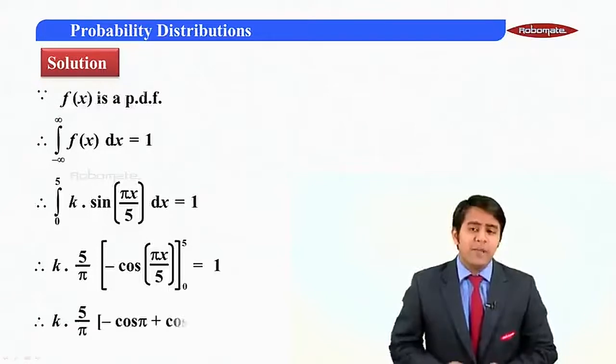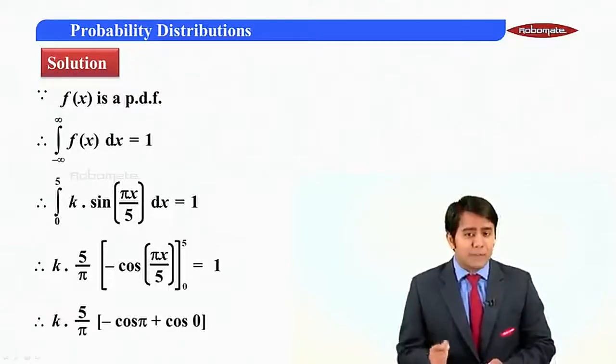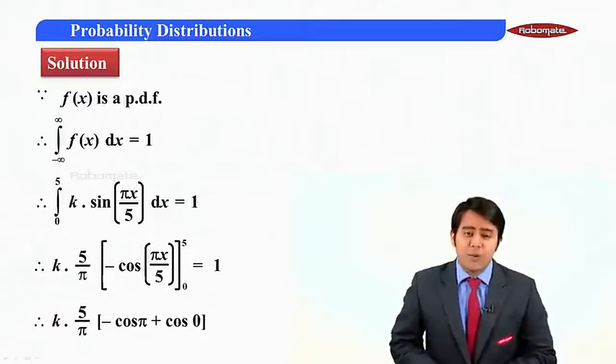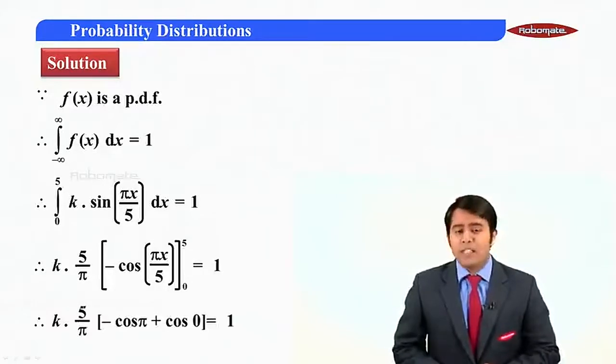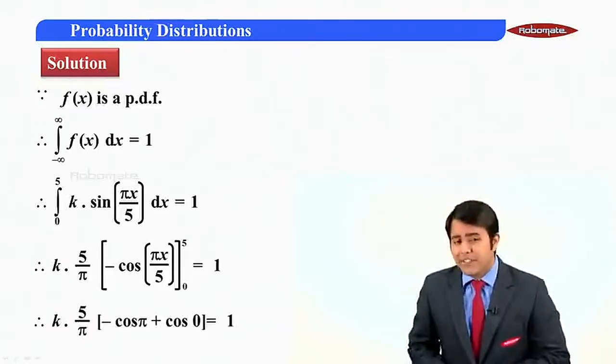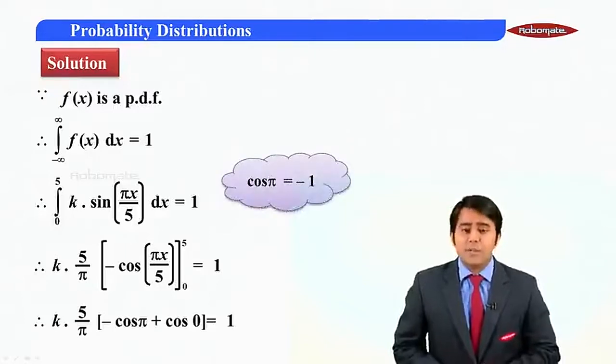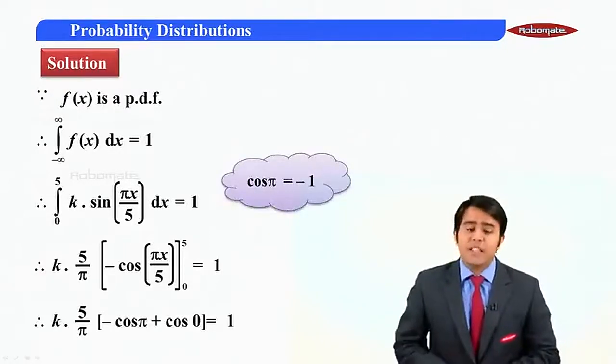Now simply substituting the upper limit here and the lower limit. k into phi by pi into minus cos pi plus cos 0 is equal to 1. Now we should substitute the value of cos pi and cos 0.